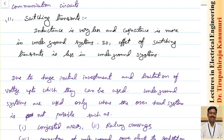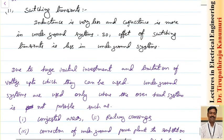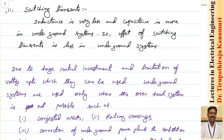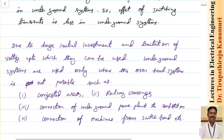Underground systems have minimum interference with communication circuits. Regarding switching transients: when a switch is suddenly closed, the inductor and capacitor oppose the change. Since inductance is very less and capacitance is more in underground systems, the effect of switching transients will be less in underground cables compared to overhead systems.